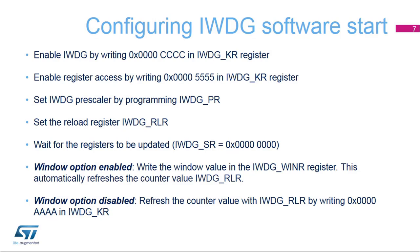The IWDG software start is configured in a few steps. The first step is to write the key register with value 0x0000CCCC, which starts the watchdog. Then remove IWDG register protection by writing 0x00005555 to unlock the key. Set the IWDG prescaler in the IWDG PR register by selecting the prescaler divider feeding the counter clock. Write the reload register IWDG RLR to define the value to be loaded in the watchdog counter.